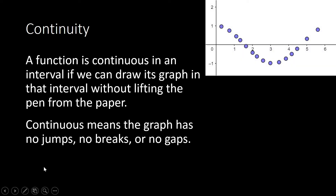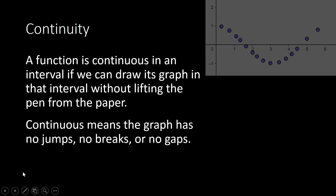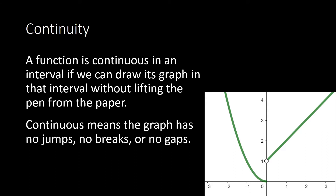So this one is the graph of a function — it's also a function, but when you sketch this graph, you have to lift your pen. If we sketch its graph in the interval negative one to one, when we get to a certain point we have to jump — we have to lift our pen. So this one is not continuous in the interval negative one to one. But it is continuous in other intervals, for example from two to three.